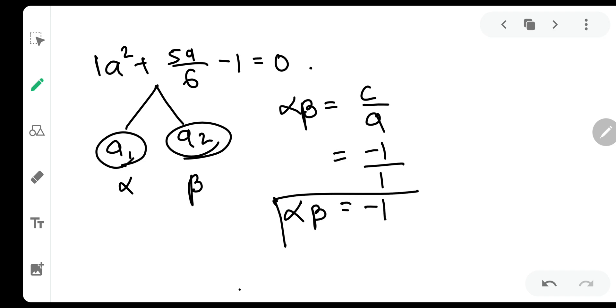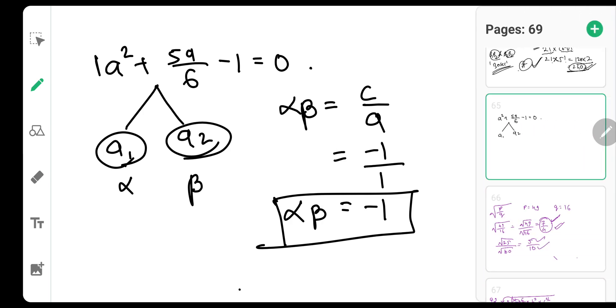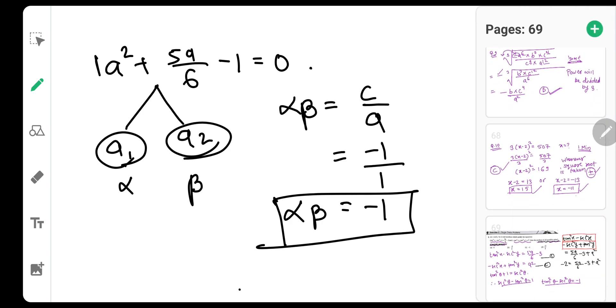It means the product of both the values of a will be minus 1. So let us check the options.